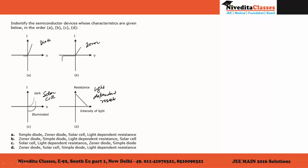So if A is a simple diode, B is a JNA diode, C is a solar cell, and D is a light dependent resistance, then the correct option will be A. This was pretty straightforward, and I think it's the easiest question of this year's 2016 exam. Thank you.